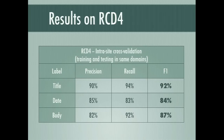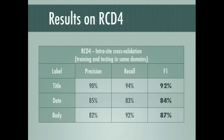We started with an intrasight cross-validation, where we train the model on some pages from a given site, such as CNN, and apply it to other pages also from CNN. The results are about 92% F1 for title, 84% for dates, and 87% for body.